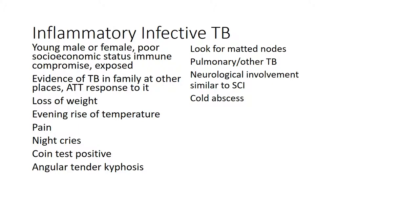In the inflammatory infective group, you have tuberculosis of the spine with paraplegia. There is a young male or female with poor socioeconomic status, immune compromise, and exposure to tuberculosis. There may be evidence of TB in the family or at other sites in the same patient, history of anti-TB treatment and response to it, loss of weight, evening rise of temperature, pain, night cries, a positive coin test, and angular tender kyphosis.